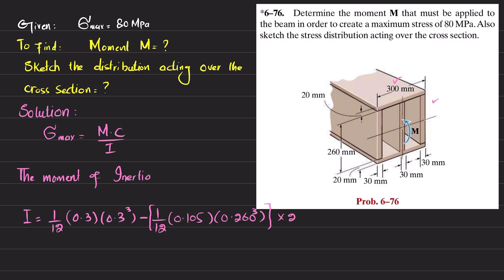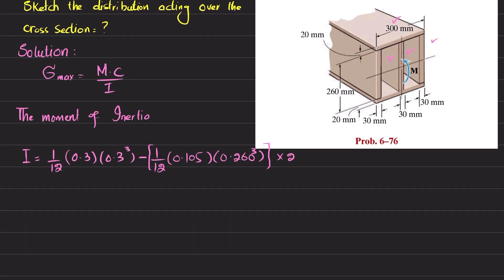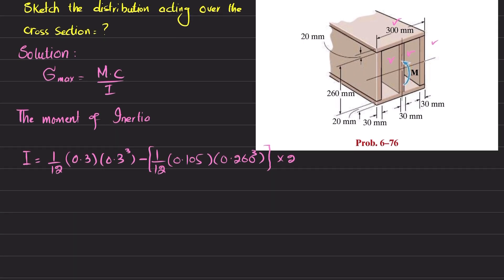We multiply by 2 because we have two hollow sections — one on each side. Solving this, the moment of inertia comes out to I = 0.36742 × 10⁻³ m⁴.